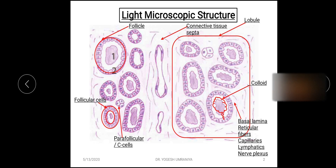Two types of cells are found in the thyroid gland. First, we have already seen the follicular cells. Apart from these, there are parafollicular cells — the pale-stained cells seen here — known as the parafollicular or C cells. Their location is between the follicular cell and the basal lamina, as well as in clusters within the connective tissue. Another name for parafollicular cells is clear cells. These cells produce the hormone known as calcitonin.